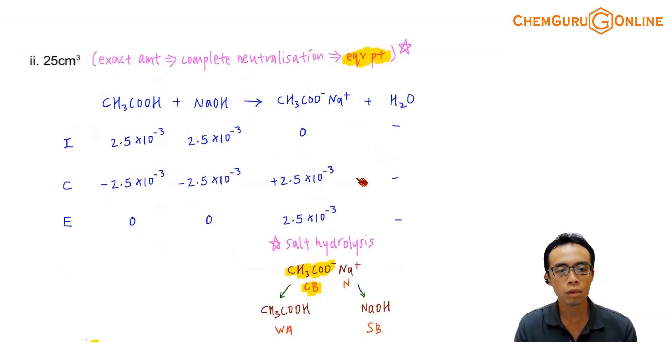Now how about part 2, a complete neutralization. I'm adding 25 cm³ of sodium hydroxide. I know that this is exact amounts, this is my VEQ, and a complete neutralization. How do I calculate the pH of my equivalence point?